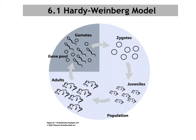In order to study evolution from a mathematical perspective, we need models that tell us what is happening with allele frequencies — because the simplest definition of evolution is a change in allele frequency from one generation to the next. The way we quantify that is through the Hardy-Weinberg model, which is an idealized population where no evolution is occurring.